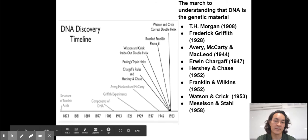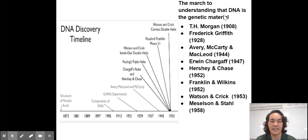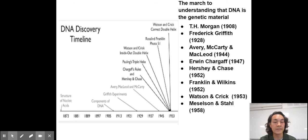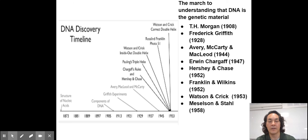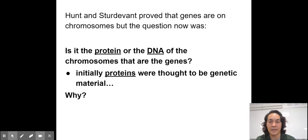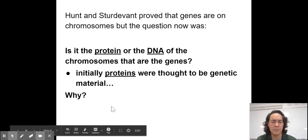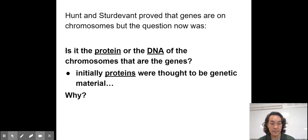There is quite a march to understanding that DNA is the genetic material. There were famous experiments — I'm not testing on them this year so I'll breeze through, but they helped show that DNA was the transforming factor and not proteins. The structure and function of DNA was really figured out by Rosalind Franklin, Watson, and Crick. Hunt and Sturtevant proved that genes are on chromosomes using fruit flies. Many people initially thought proteins were the genetic material because there are 20 amino acids that make up proteins, providing great diversity — but it's actually DNA.